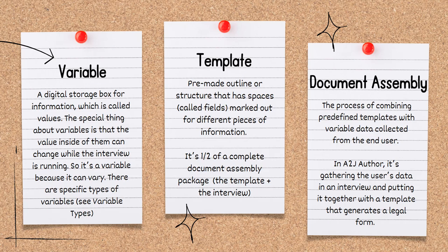There are specific types of variables — see the definition variable types. A template is a pre-made outline or structure that has spaces, called fields, marked out for different pieces of information. It's one half of a complete document assembly package, which includes a template and an interview. Document assembly is the process of combining predefined templates with variable data collected from the end user. In A2J Author, it's gathering the user's data in an interview and putting it together with a template that generates a legal form.